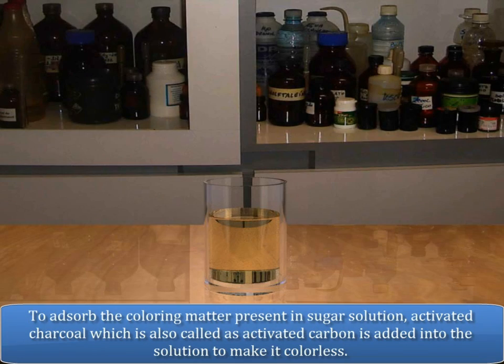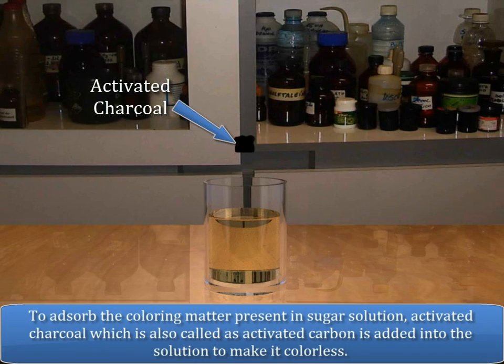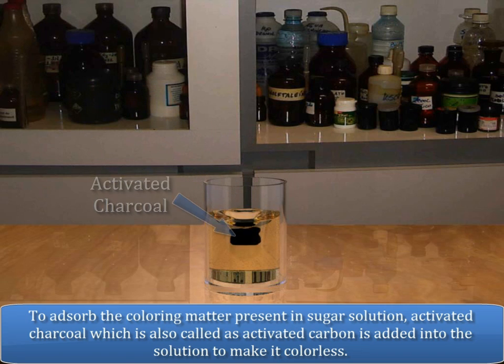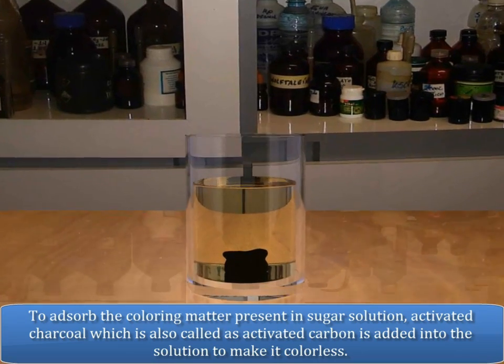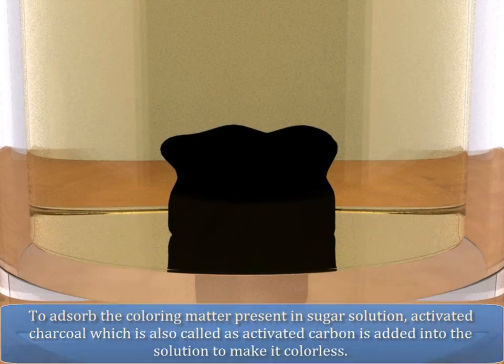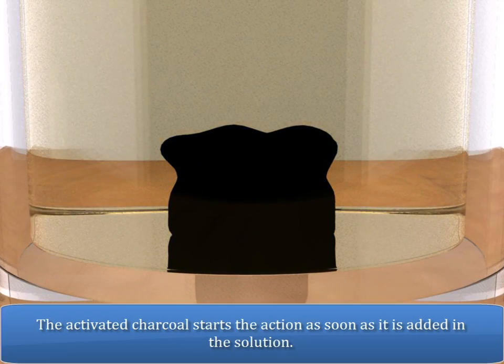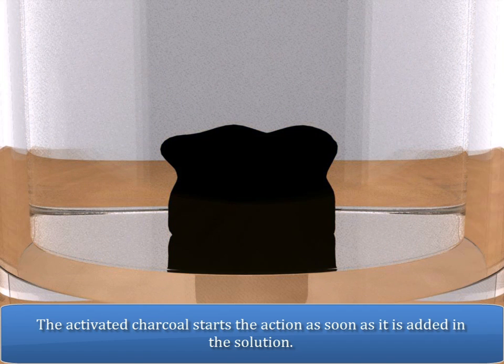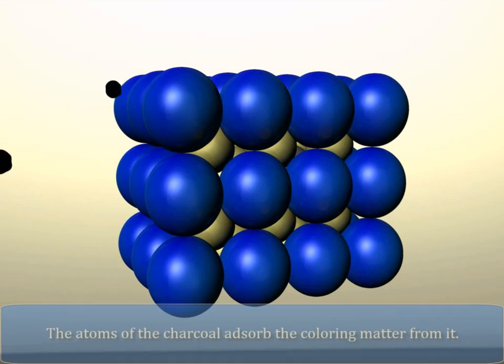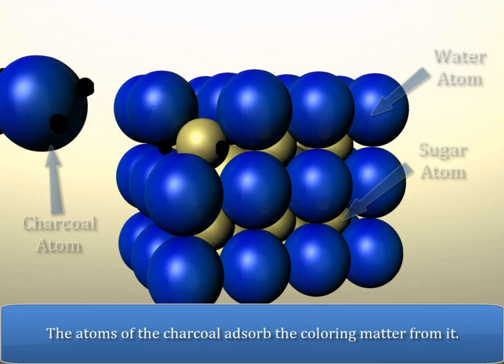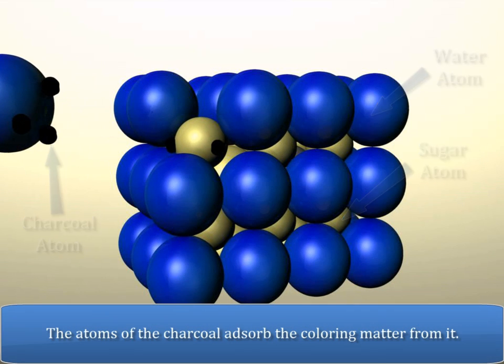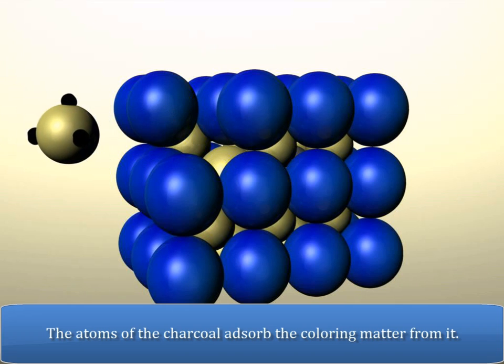To absorb the coloring matter present in sugar solution, activated charcoal, which is also called activated carbon, is added into the solution to make it colorless. The activated charcoal starts the action as soon as it is added in the solution. The atoms of the charcoal absorb the coloring matter from it.